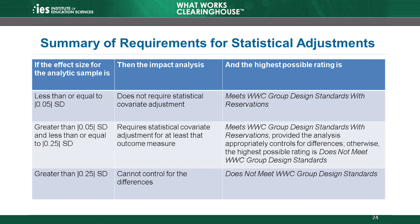Finally, if baseline differences are greater than .25 standard deviations, they cannot meet WWC group design standards with reservations, even if they adjust for the covariate.